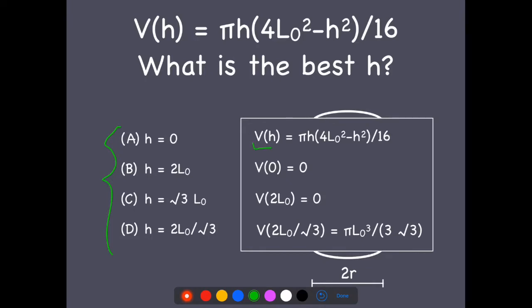Now if you find the critical points of this one, it's a cubic. Because of the structure of the function, I've already eliminated a negative critical point. It has a critical point at 2L₀ over root 3 and another one that I'm not interested in. When I evaluate it, this one clearly comes out to be the highest value of the three. This beats out zero and zero for sure. So that is the correct answer, D. We want to choose h to be 2L₀ over root 3.